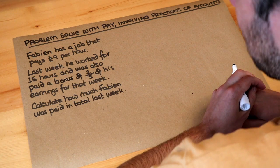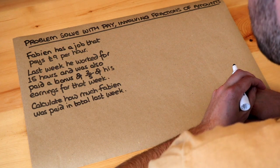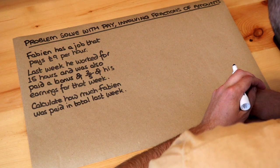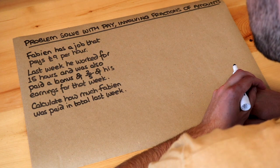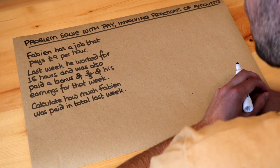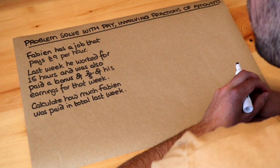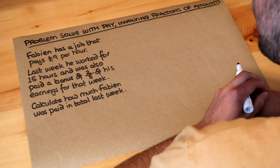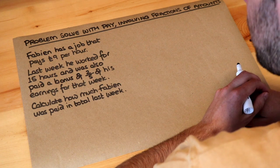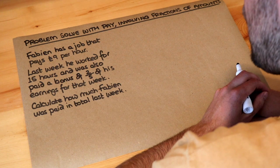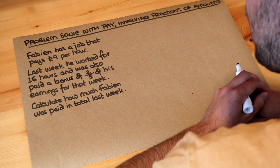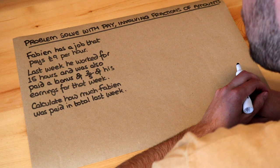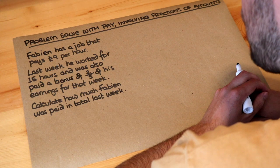Hello and welcome to the Stop Tross video on problem solving with pay involving fractions of amounts. Let's read the question. Fabian has a job that pays £9 per hour. Last week he worked for 15 hours and was also paid a bonus of two-fifths of his earnings for that week.